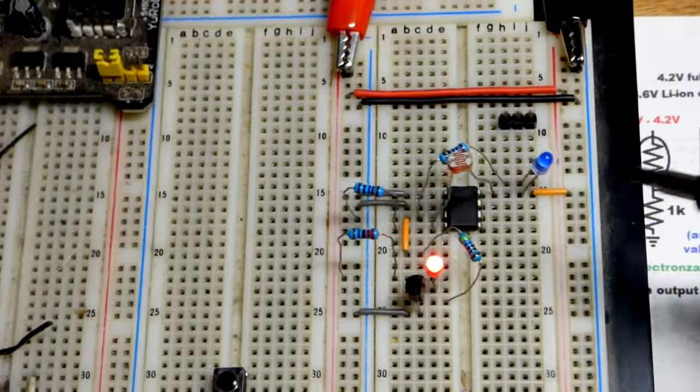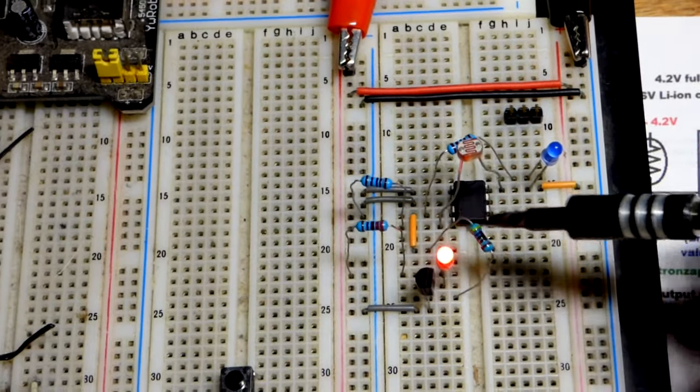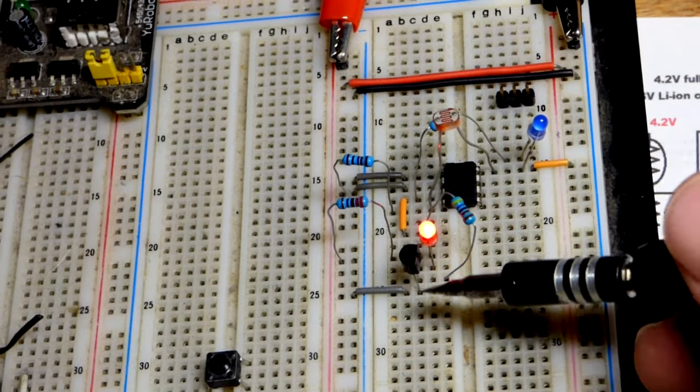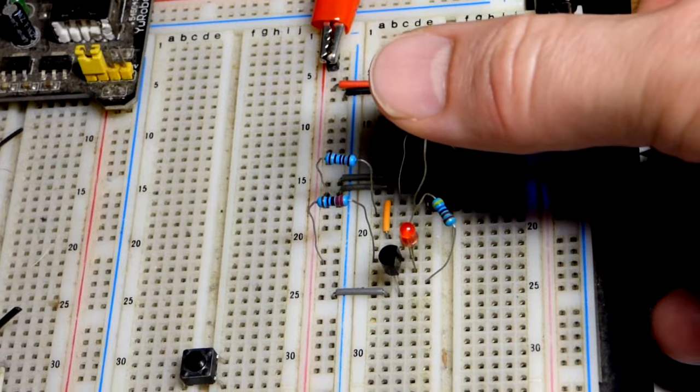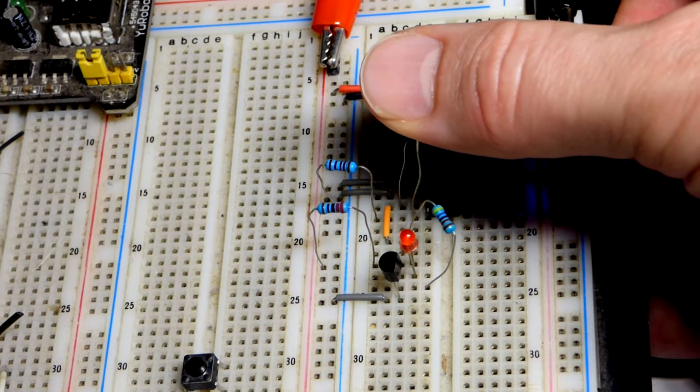We'll zoom over here and we can look at that. You can see the output, I got a little jumper going to the 4.7K to the base of the 2N3904. It switches on when the output is high. And when it's low, it switches the red LED off.